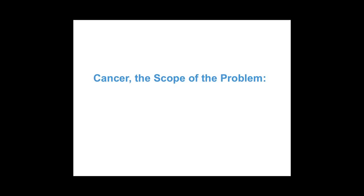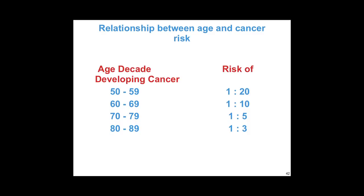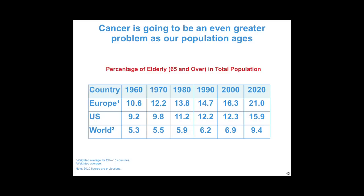I want to give you some sense of the problem we face as a society with respect to cancer. With each increasing decade, there is essentially a doubling of the risk of developing cancer. People in their 50s have about a 1 in 20 risk, and people in their 80s it's as low as 1 in 3. This is going to be a bigger and bigger problem as our population ages. In the 1960s, approximately 10% of people were over 65, and projecting forward into 2020, approximately double that number will be over 65. So we have seen an increase in cancer and will continue to see one — this will continue to be a genuine burden on our society.